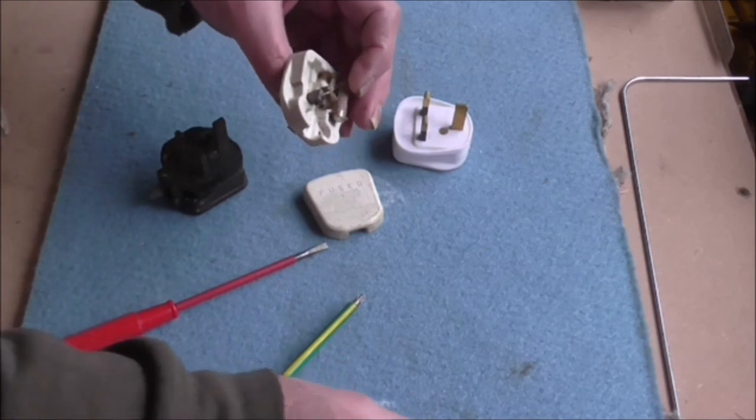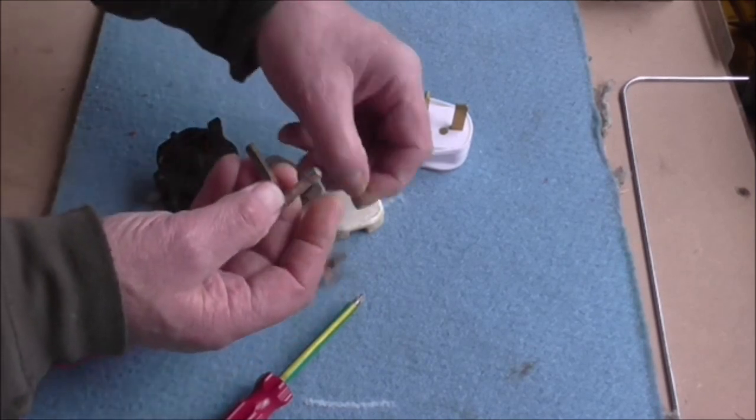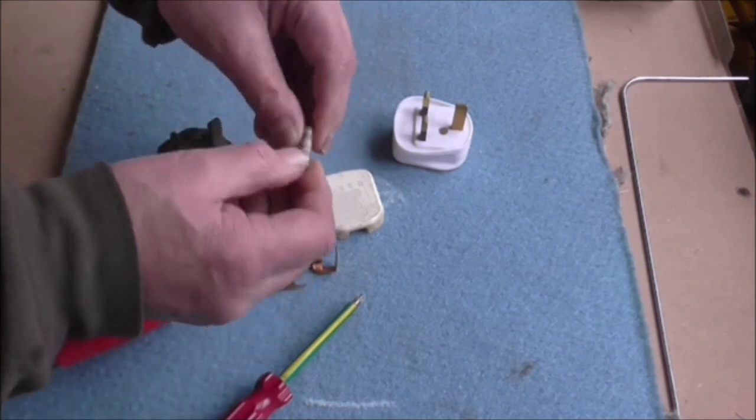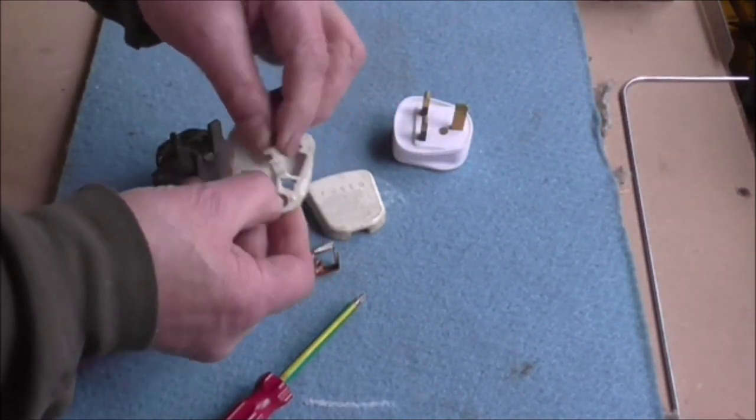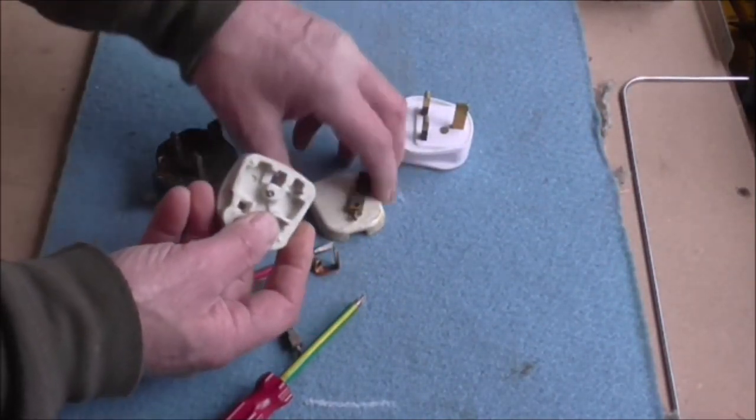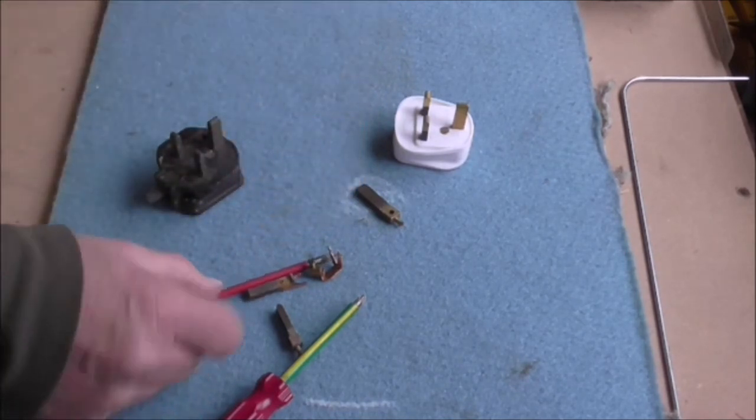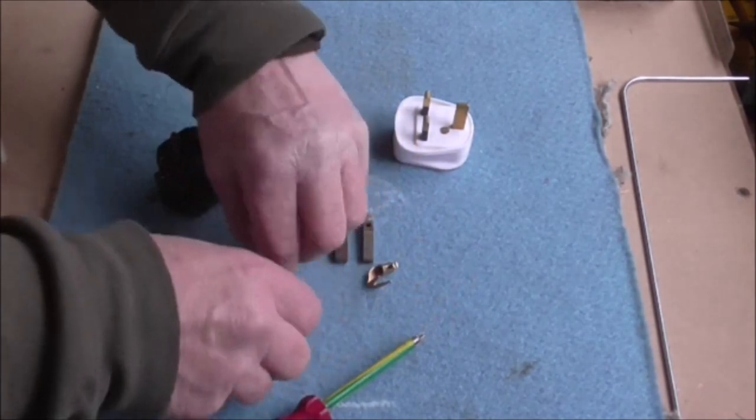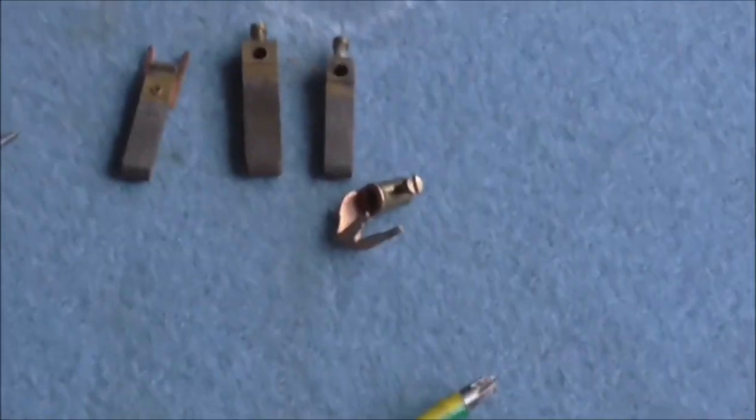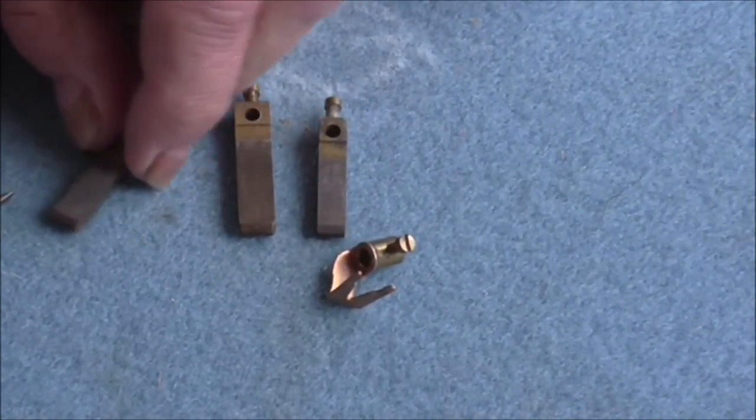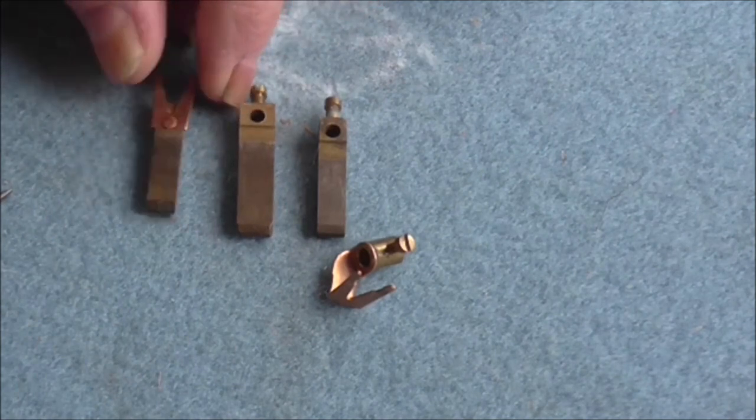Then you've got the pins themselves. Take the fuse out. You've got a little fuse carrier and the fuse itself—put that in your spares box. Now the pins themselves—take them out. The actual plastic part, the top, that's no good. I can't think of any use for that, so that goes in the bin. You're left with the pins and the fuse carrier. This one at the other end isn't much use—there's a nice bit of solid brass you could use, but generally I throw those away.